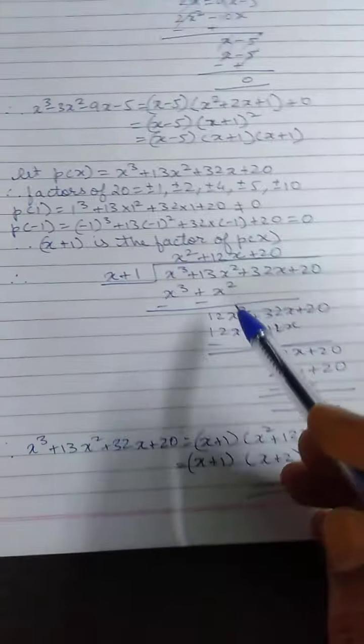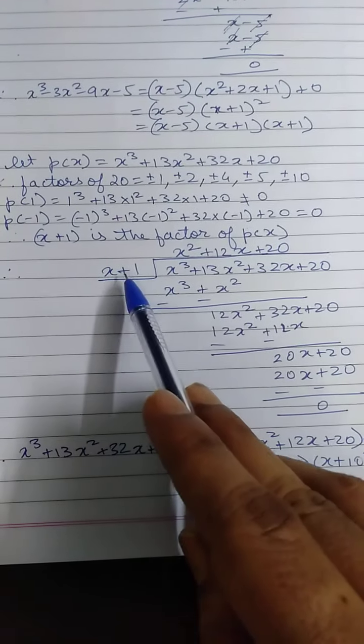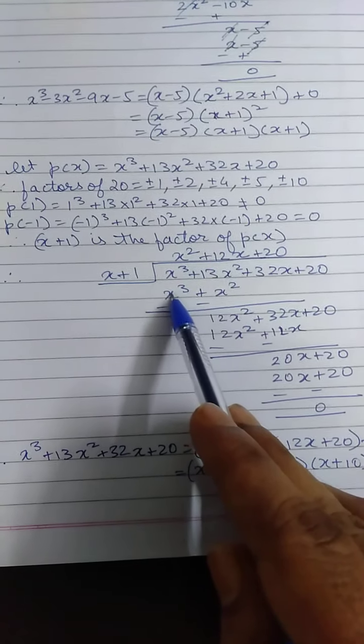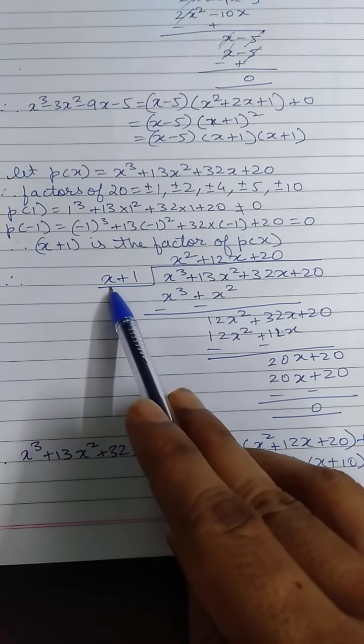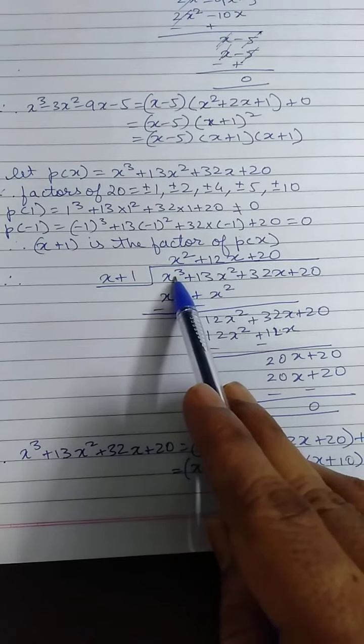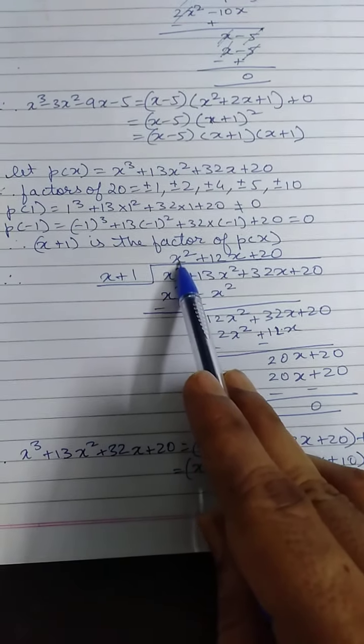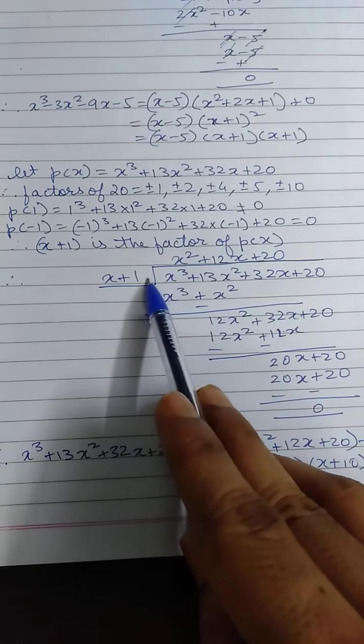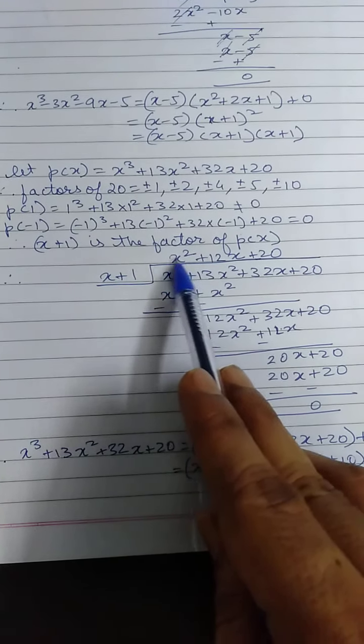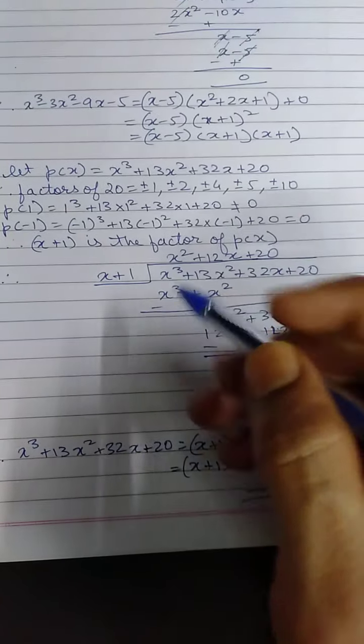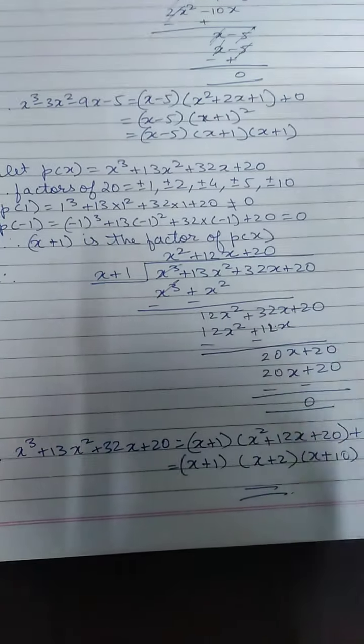Now I divide my polynomial by x plus 1. Same procedure we follow. We need first term as x cube. What should be multiplied with x to get x cube? So I will multiply x square. x square into x will give me x cube. Now multiply x square with the other terms of the divisor also. Here it is 1. So x square into 1 will give you x square. You write the corresponding numbers below it.